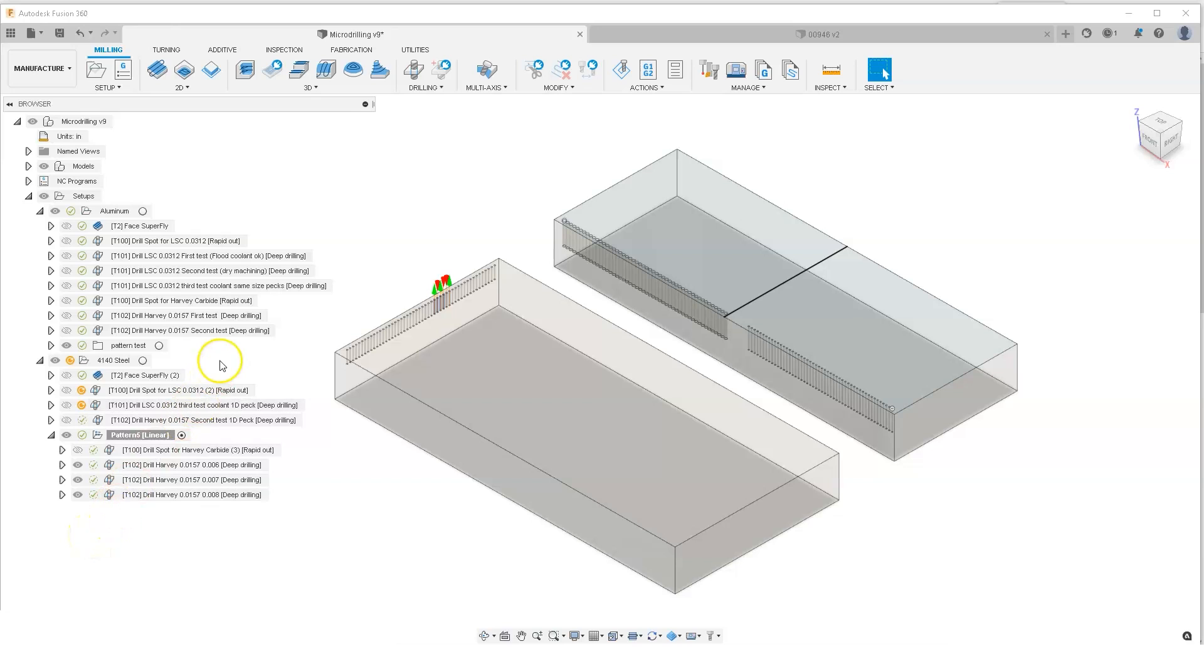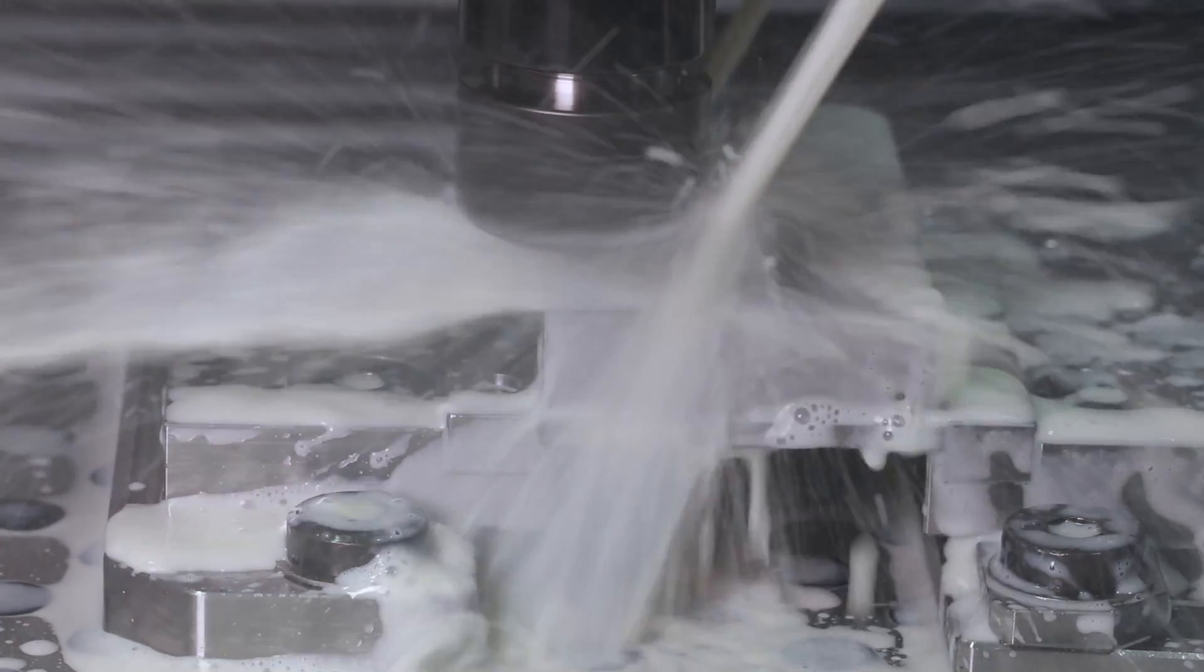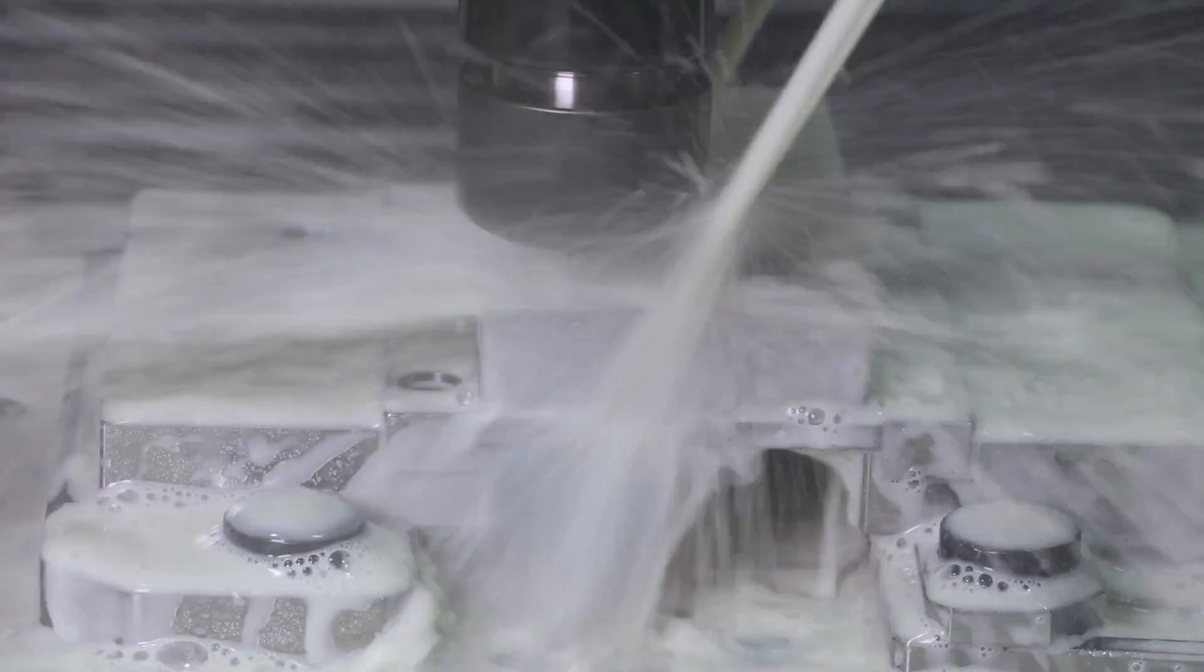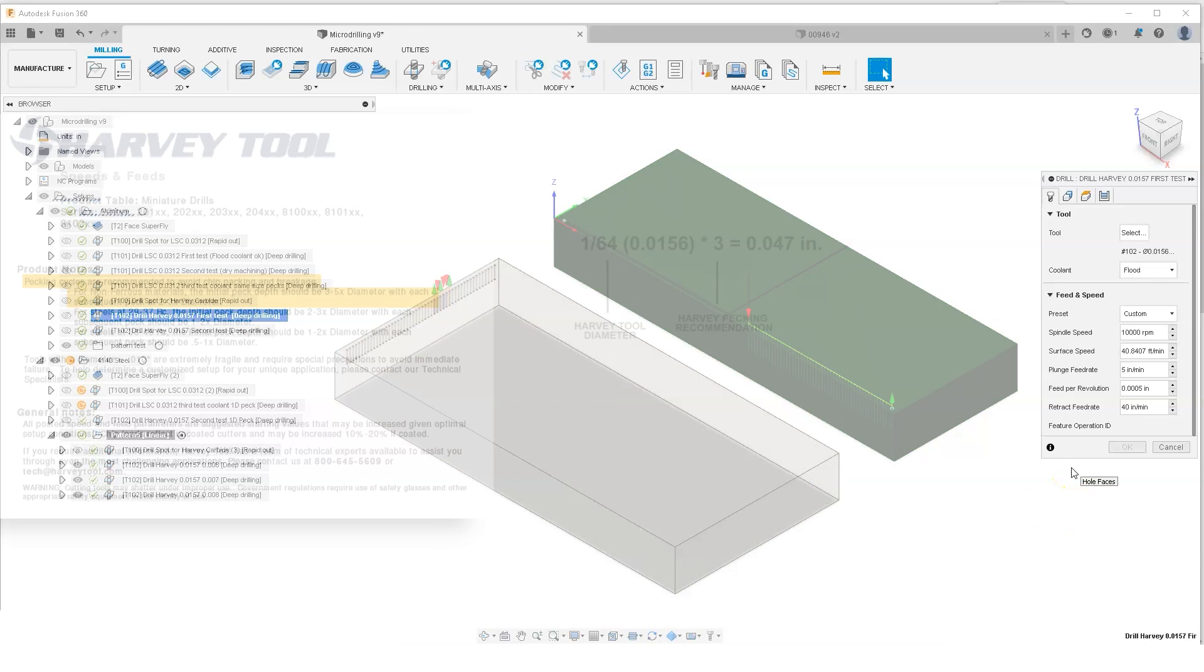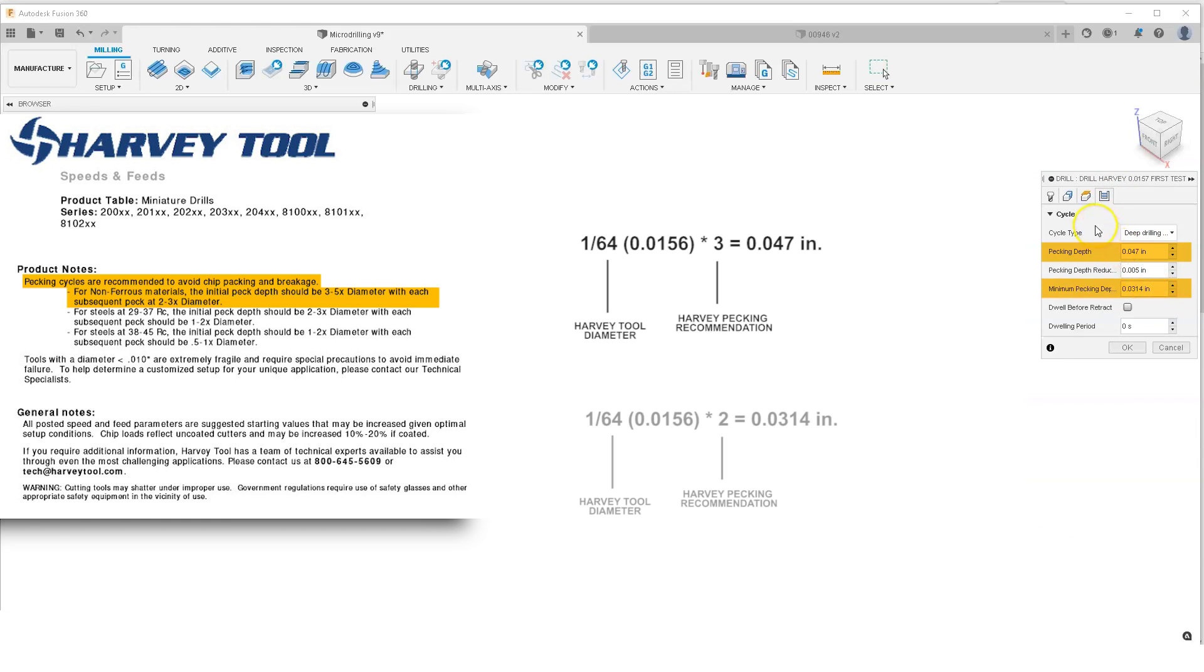Next it was time to run the Harvey tool 15 thou carbide drill. We started by spotting that as well and we only spotted to a depth of 2 thou and that was plenty to make a nice little divot to guide the tool. For the first test I actually went with the Harvey tool recommendations for its pecking. Three times diameter and then going to a two times diameter.